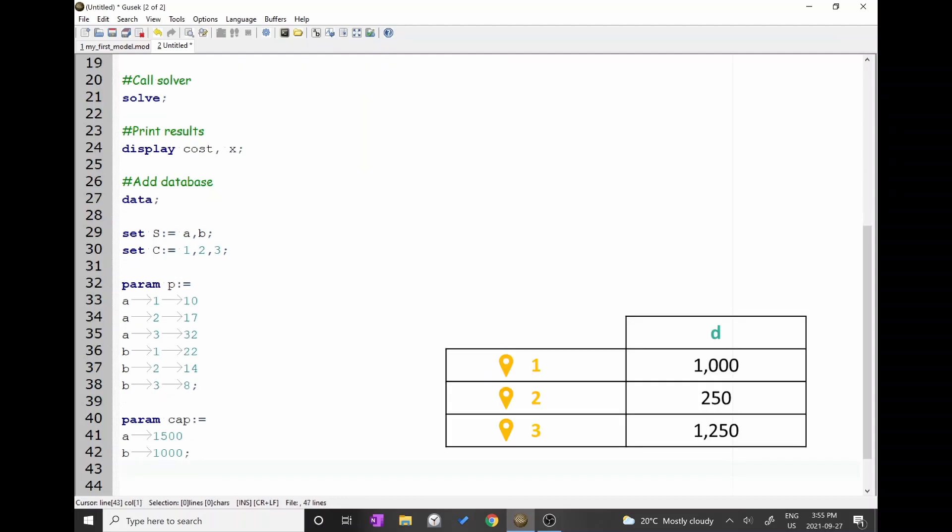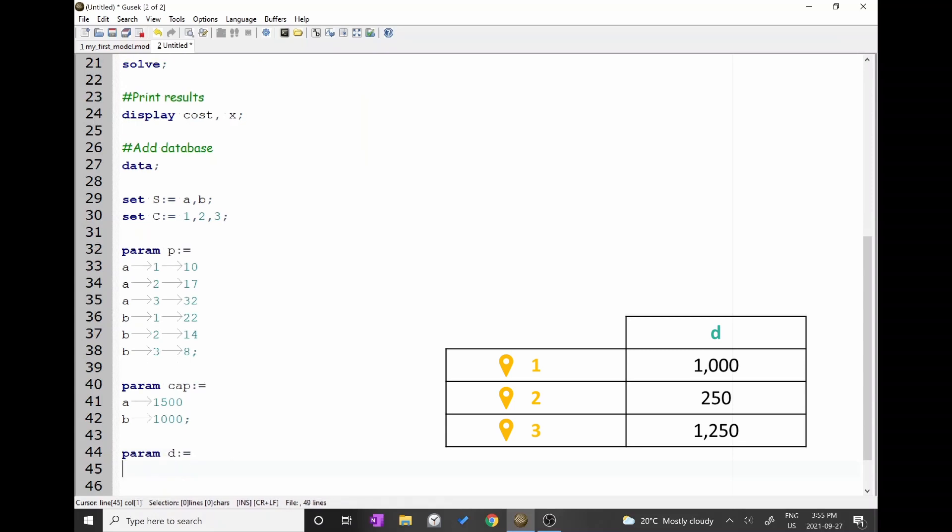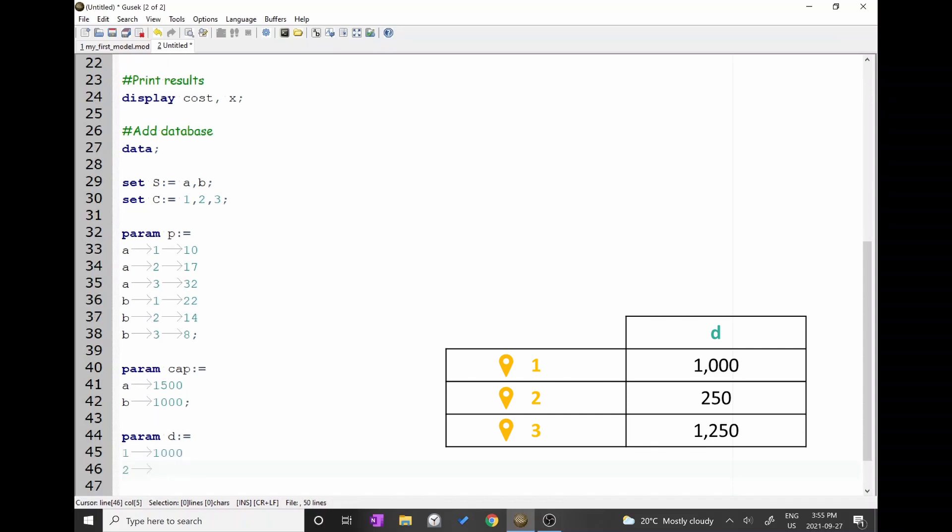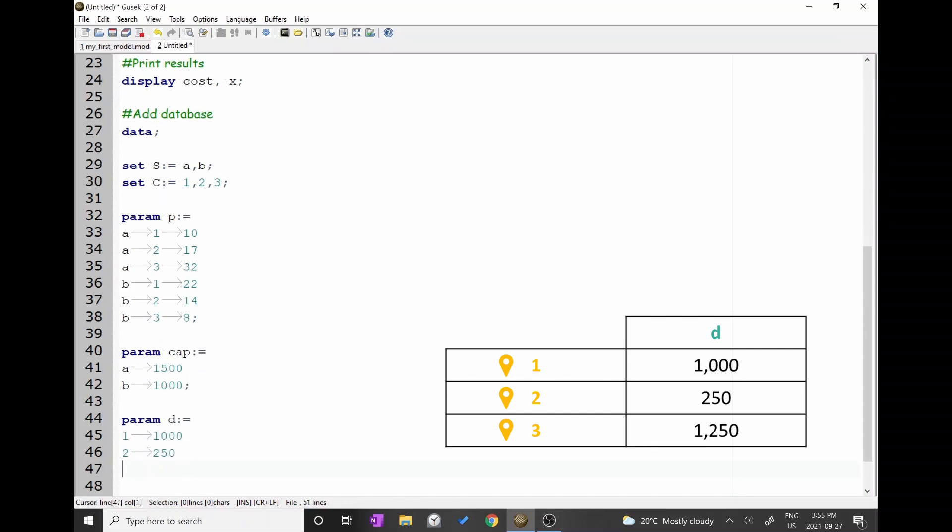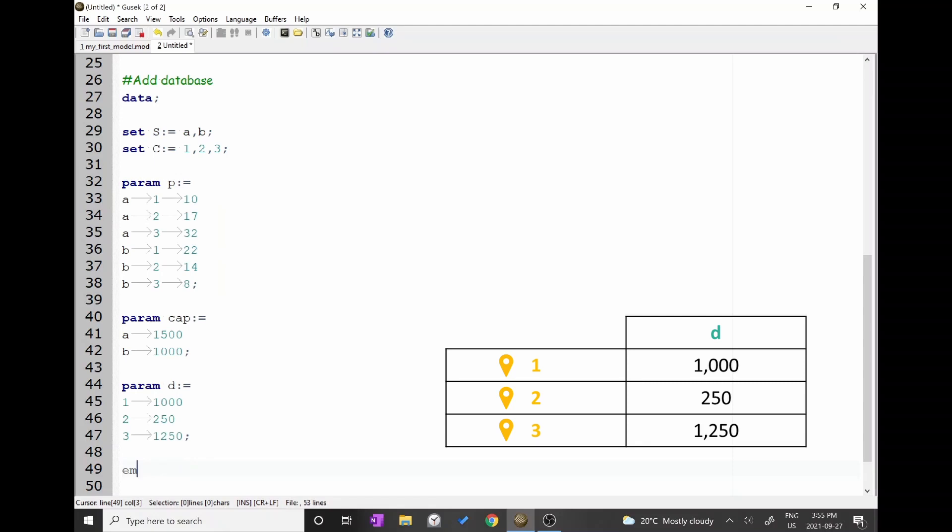Let's also write the demands of the customers. Type param d, colon, equal, and press enter. Write 1, tab, 1,000, enter, 2, tab, 250, enter, 3, tab, 1,250, semicolon.